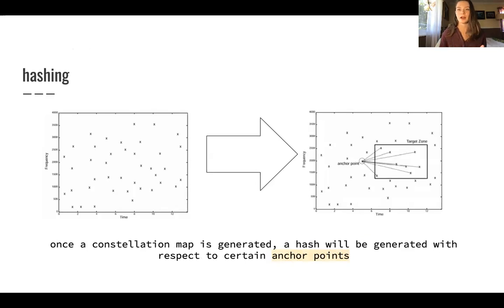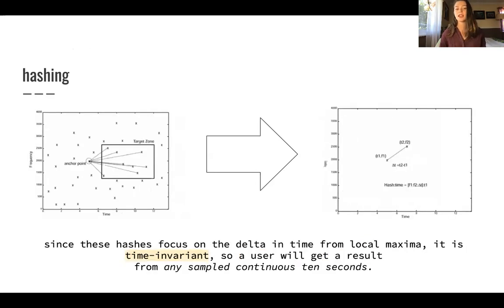So this is a bit about what I discussed on the last slide. Once a constellation map is generated, a hash will be generated with respect to certain anchor points. What's important about this, which I'll discuss on the next slide, is that these hashes focus on the change in time from local maxima.